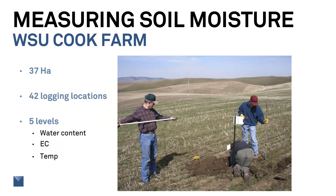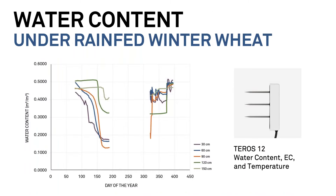Here's an example where we measured soil moisture, electrical conductivity, and temperature at 42 locations in a field at the Washington State University agronomy farm. We've made measurements at 30, 60, 90, 120, and 150 centimeters — or each foot down to five feet — under a crop of winter wheat. Here are some of the data that we collected in that experiment. I'm showing here a picture of the Teros 12 soil moisture sensor that we sell now. For these measurements, when we did this study, we used a sensor called the 5TE, but the results would be similar or better with the Teros 12. The purple line is 30 centimeters, blue is 60, orange is 90, dark green is 120, and light green is 150 centimeters.